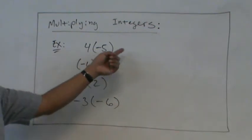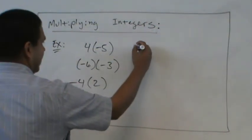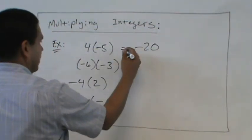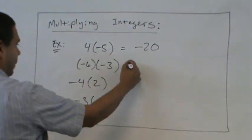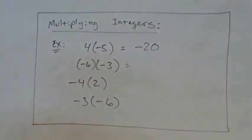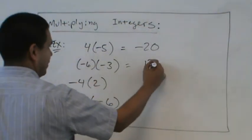First one. Negative 20. Negative 20, excellent. Positive times negative, negative. Four times five, twenty. This one. Eighteen. Eighteen. Very good.